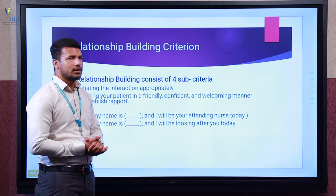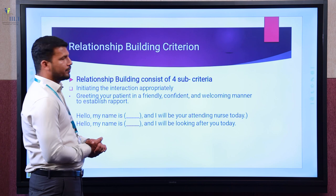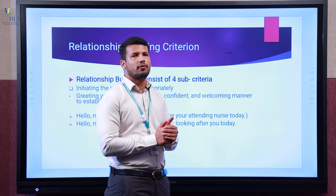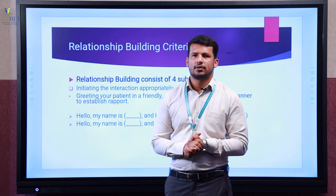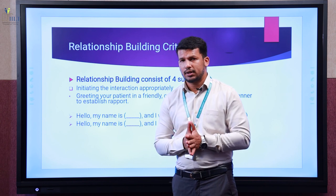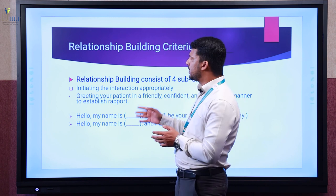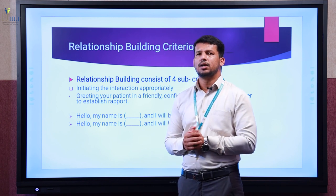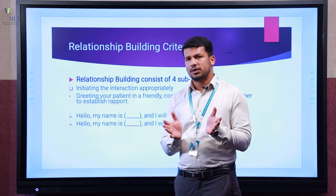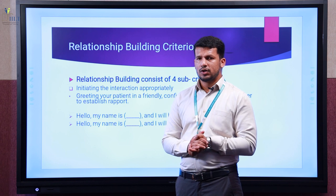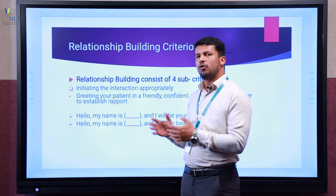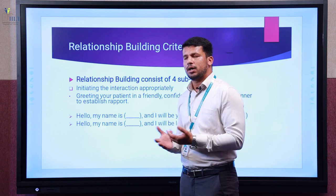The relationship criteria consists of four sub-criterions. It's not only one thing which is given importance in the relationship criteria. Unless you complete all four sub-criteria, only then is your relationship criteria fully covered. We will be stressing on those four sub-criteria — what they are and what they are about.